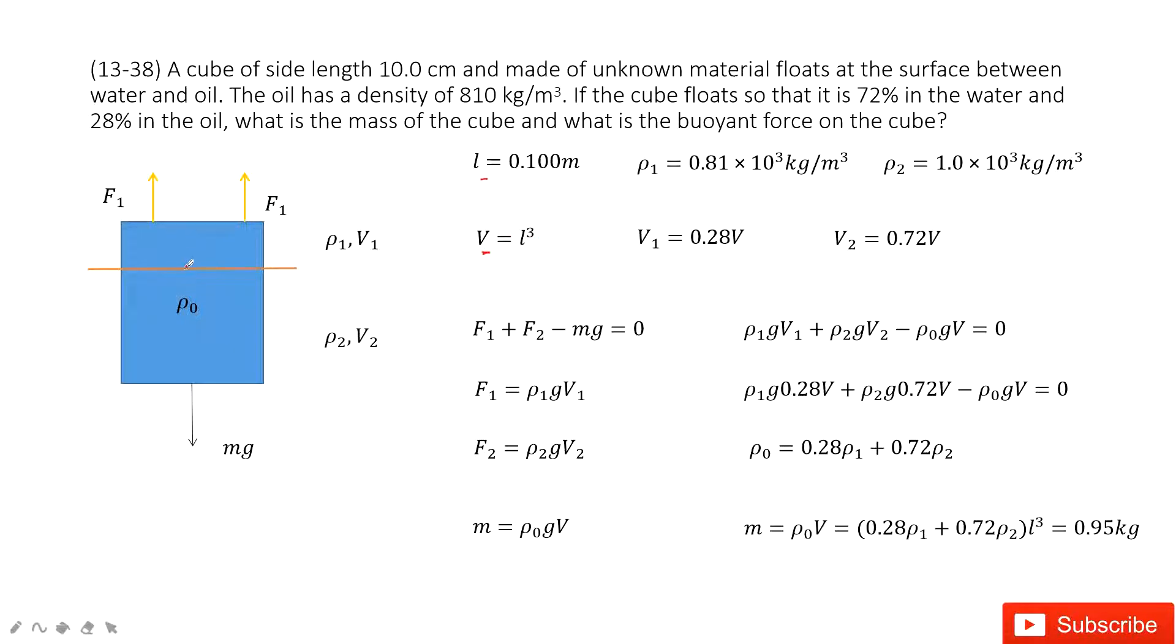Now it floats at the boundary of two liquids. The first one is oil, the second one is water. So ρ₁ is the density of oil and ρ₂ is the density of water.